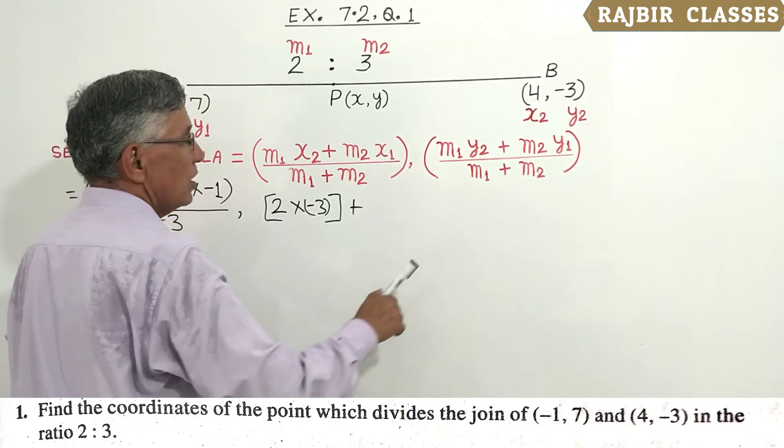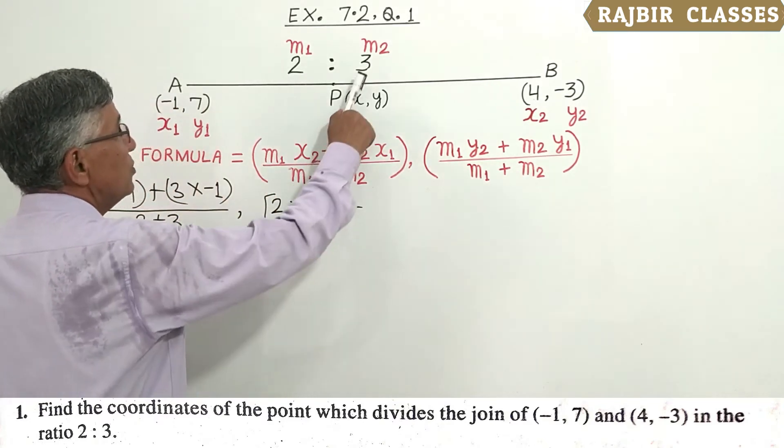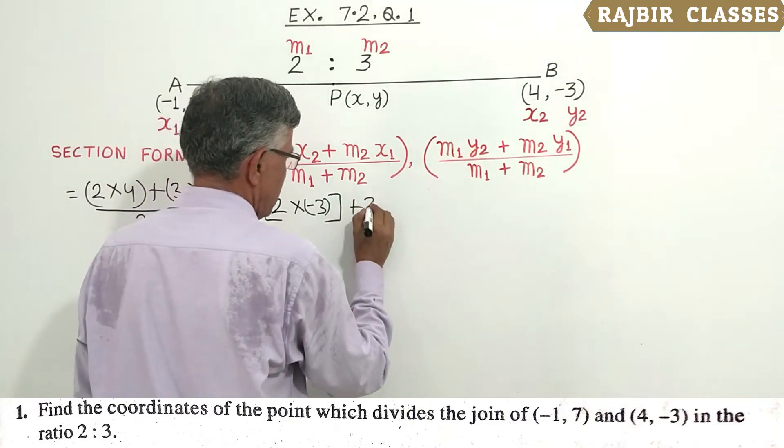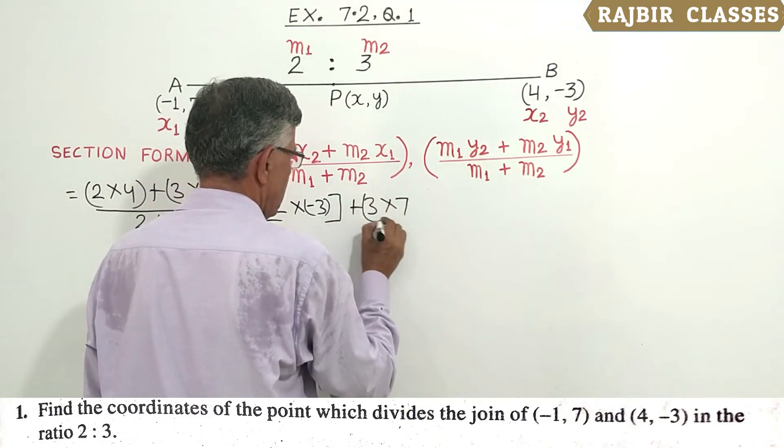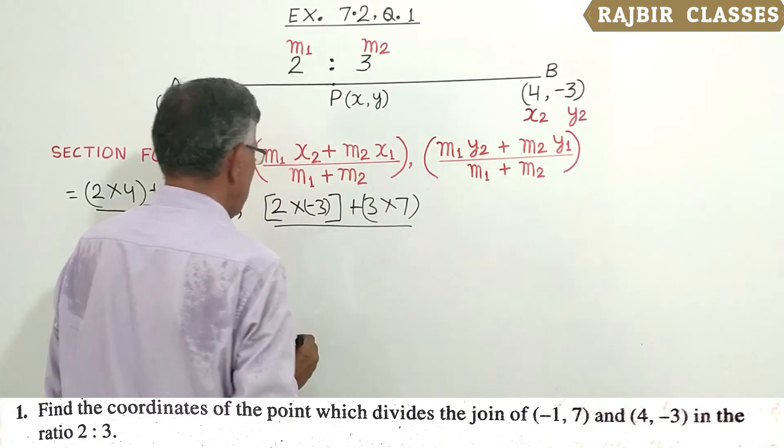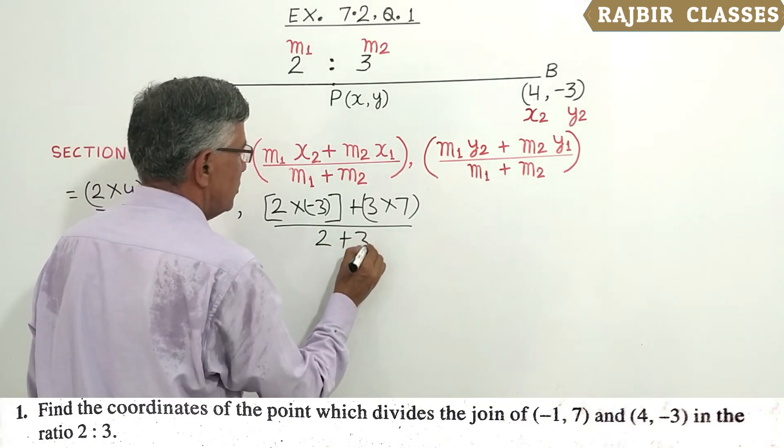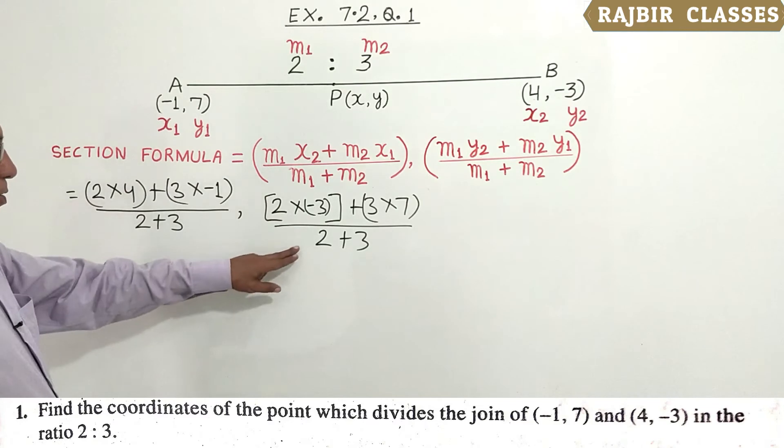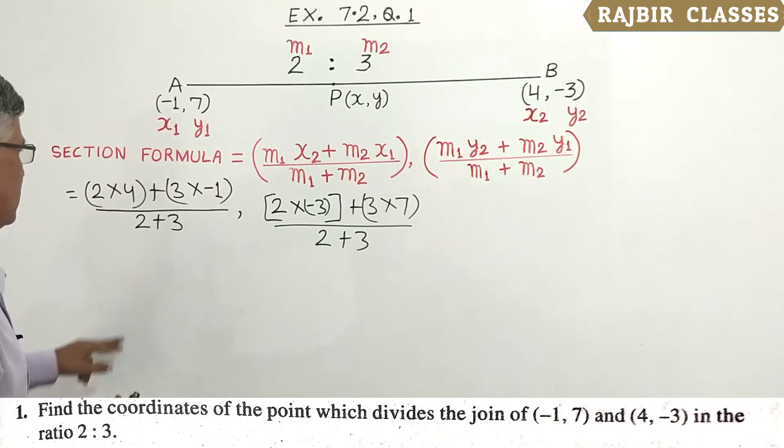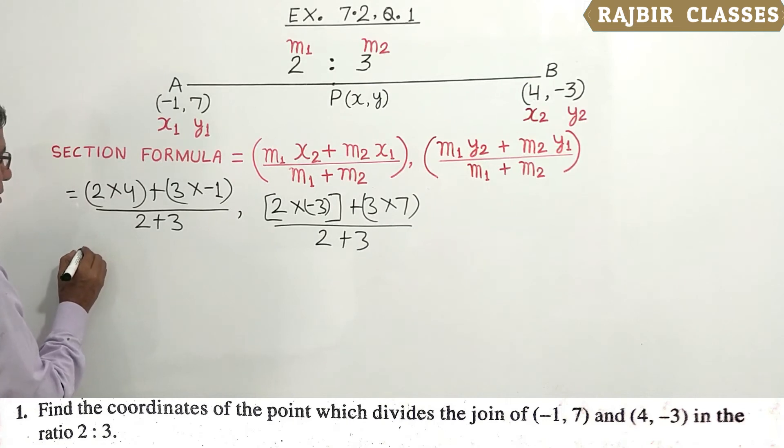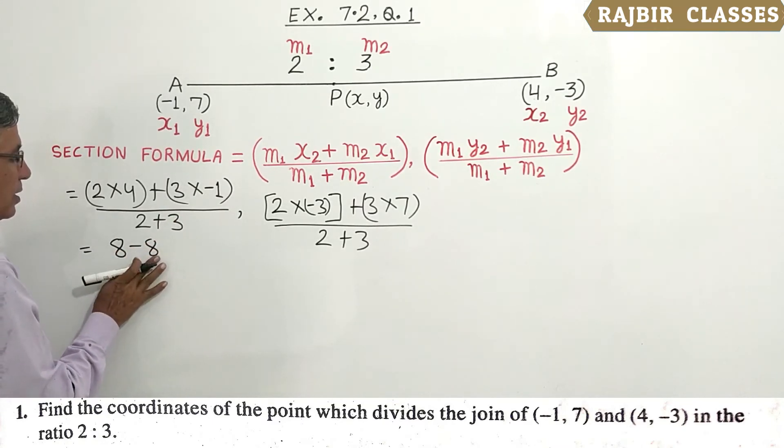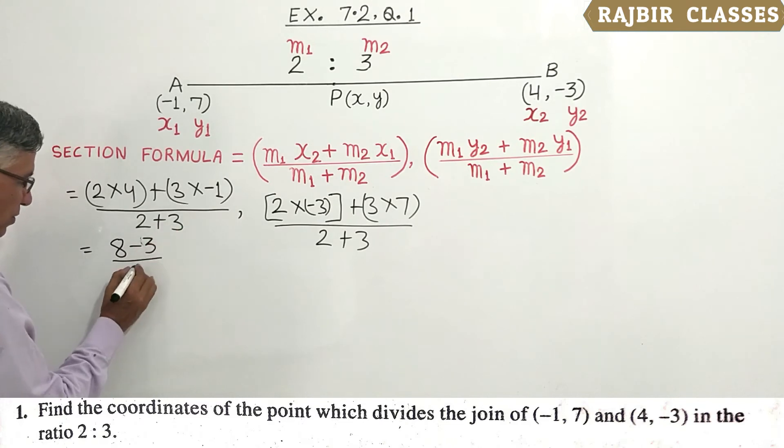For y-coordinate: 3 into 7, divided by 2 plus 3. For the x-coordinate: 8 minus 3 equals 5, divided by 5.